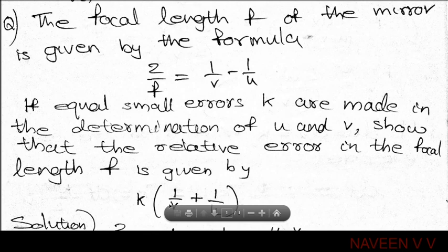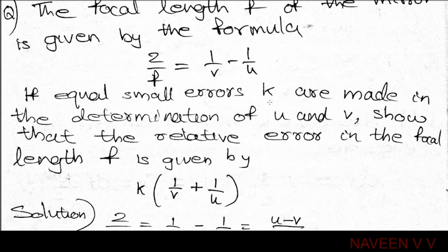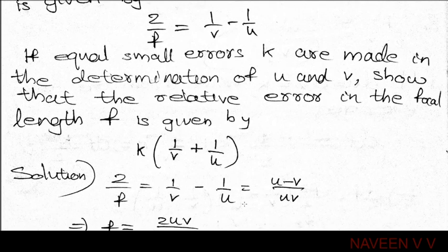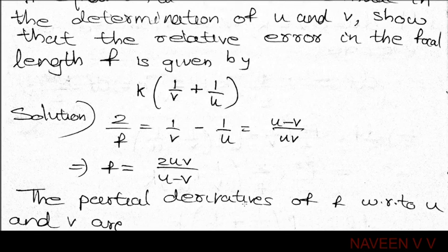The focal length formula considered is 2/f = 1/v minus 1/u. The relative error in the focal length is df/f = k times (1/v + 1/u).